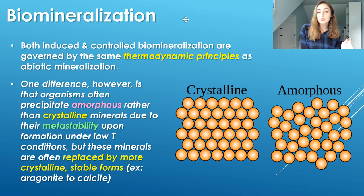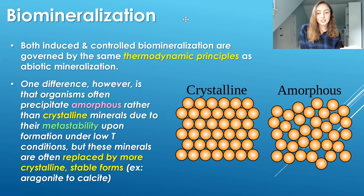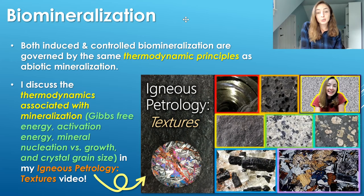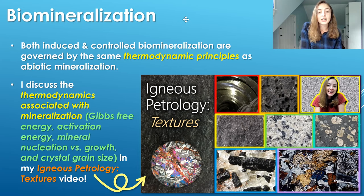The tendency toward amorphous minerals for biomineralization is because of the metastability upon formation under low temperature conditions. Under higher temperature conditions where abiotic mineralization takes place, crystalline minerals typically form and are more stable under those conditions. Because of the metastability of the formation of amorphous minerals under biomineralization conditions, these minerals are often replaced later on by more crystalline stable forms. For example, the transformation of aragonite to calcite, which I talk more about in my fossil preservation video — I'll link it up here if you want to check it out. That transformation is due to the greater stability of calcite than aragonite.